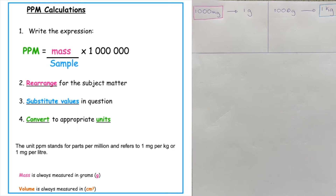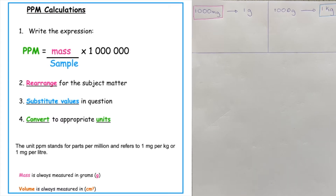Parts per million calculations are a calculation that we are asked to do in advanced higher chemistry. The expression we use is: ppm is equal to the mass of the entity you are wanting to work out — which can sometimes be volume as well, usually of a drug — over the sample where that entity is found or contained within. It could be a mass or a volume. Then we multiply by a million, as it's parts per million.